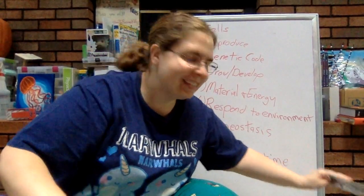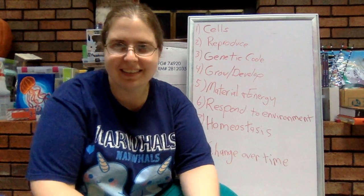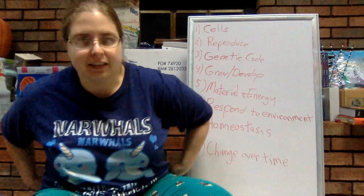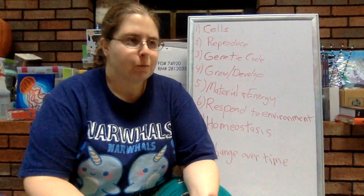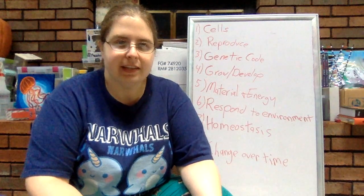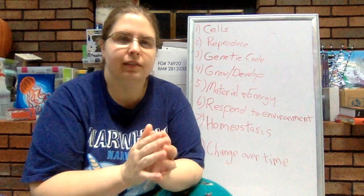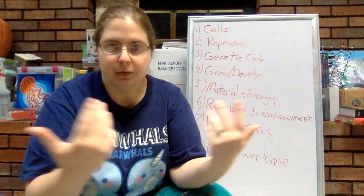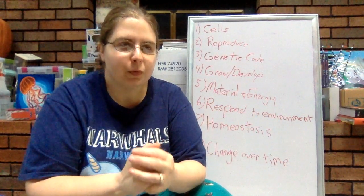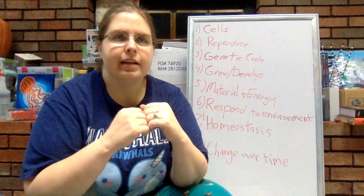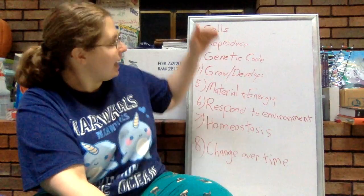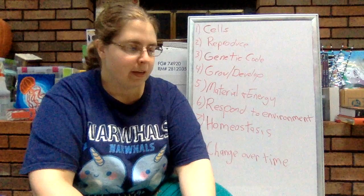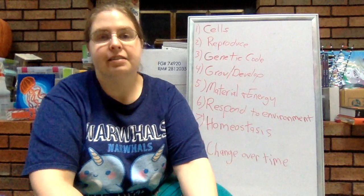We are back with another exciting episode of Science in Pajamas. Today we're going to talk about the eight characteristics of living things. Way back in the day, scientists had to figure out how to define what a living thing is. They came up with eight criteria. If something can check off yes to all of this criteria, then it's considered a living thing. If it can't, then it's a non-living thing.